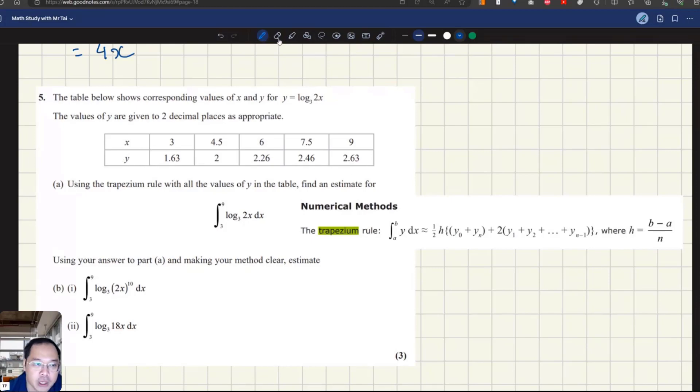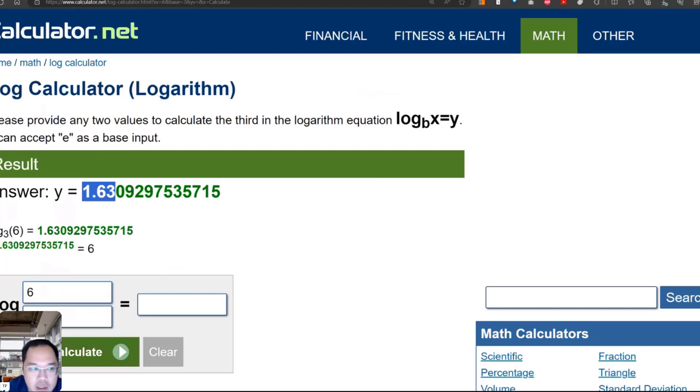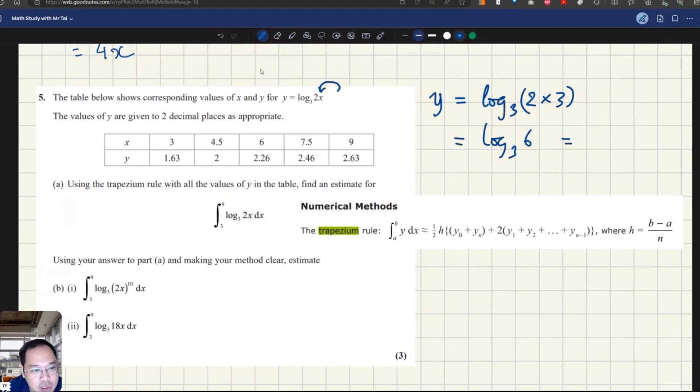For example, when x is 3, we simply just plug the value 3 into this value x. So we have y of 3 is log base 3 of 2 times 3, meaning log base 3 of 6. And we simply use the calculator. Here, log base 3 of 6 is 1.63, which is given here on the table.